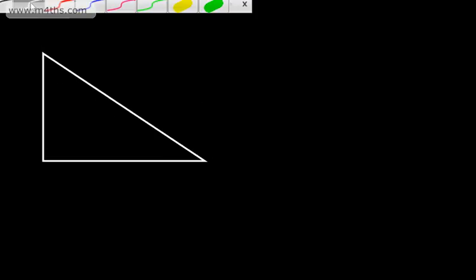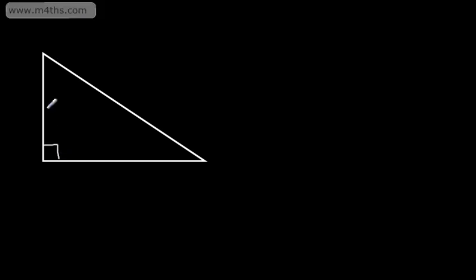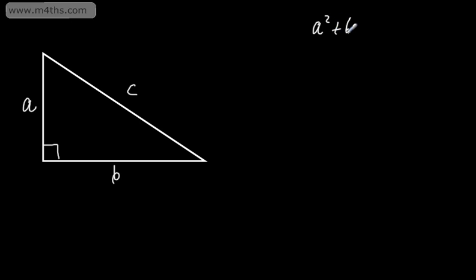Here's a 2D triangle, and you can use Pythagoras to find a missing length in this triangle. So if we write that this is A - that's one of the shorter sides - the other shorter side we'll call B, and the hypotenuse, which is the longer side and always opposite the right angle, is C. Pythagoras' theorem says that A squared plus B squared is equal to C squared in 2D.